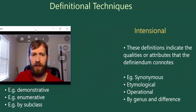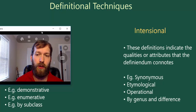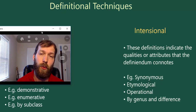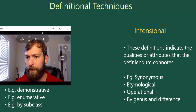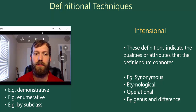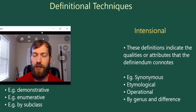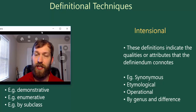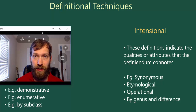The other broad kind of definitional technique is intentional, where we rely on the properties, qualities, or attributes in order to assign a meaning to a word or group of words. We're thinking about what the definiendum connotes and relying on those to assign its meaning. Examples include synonymous definitions, etymological definitions, operational definitions, and definitions by genus and difference. Let's look at these definitional techniques in more detail.